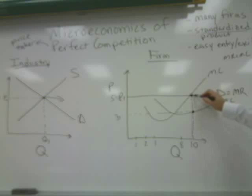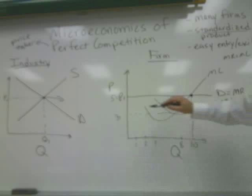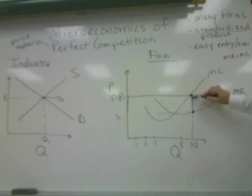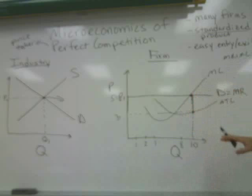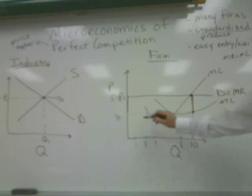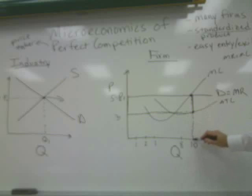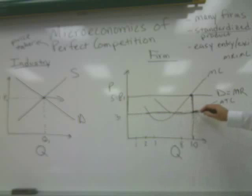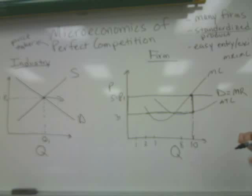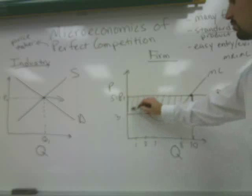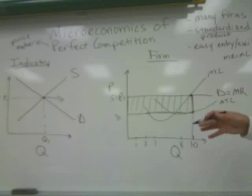The firm is generating five dollars of revenue, therefore there's a net per unit profit equal to the vertical distance between the demand curve and the average total cost curve. On a per unit basis, this firm is earning two dollars of economic profit. Because it's selling 10 units at the marginal revenue equals marginal cost profit-maximizing output, the firm is incurring three times ten, which is thirty dollars of total cost, and five times ten, which is fifty dollars of total revenue, leaving twenty dollars of total economic profit.